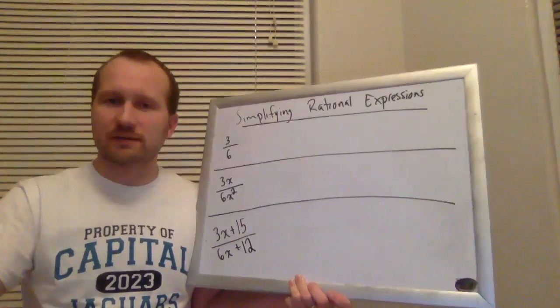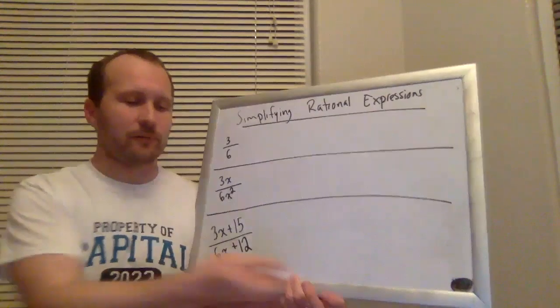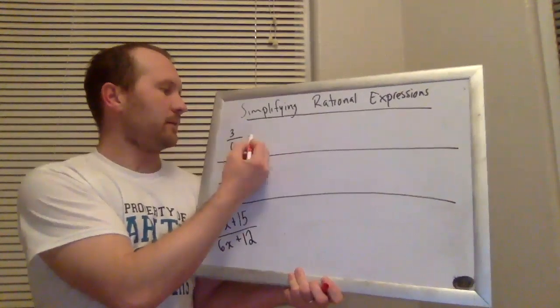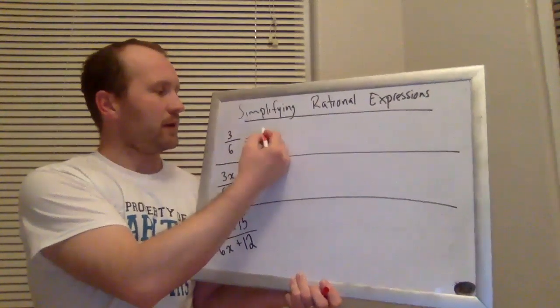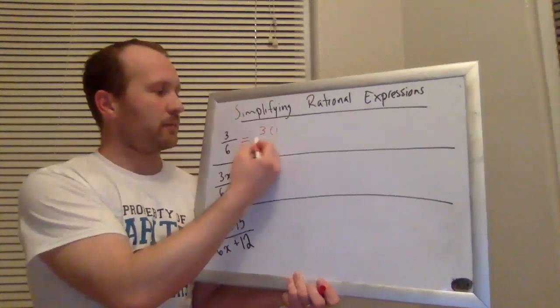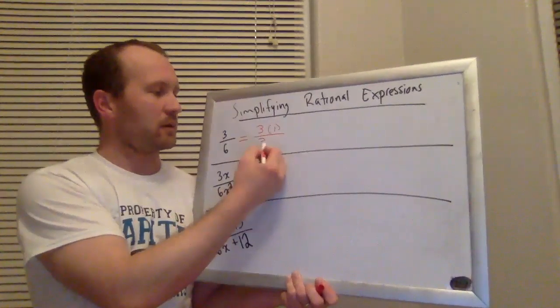Why is three-sixths the same as one-half? Well it's because these have a common factor. Three is equal to three times one. Six is equal to three times two.